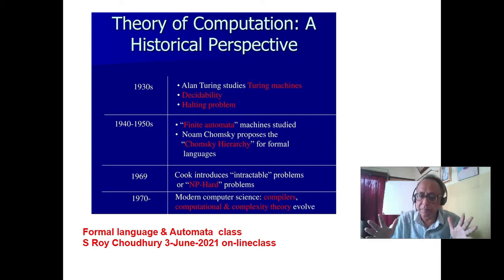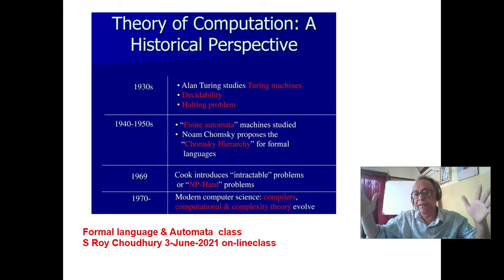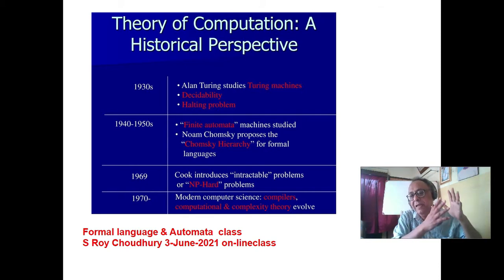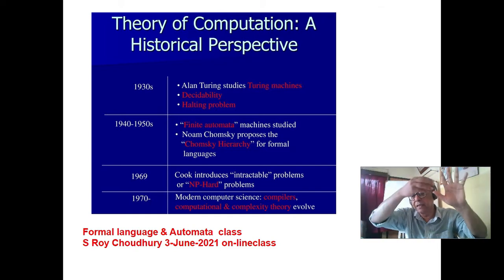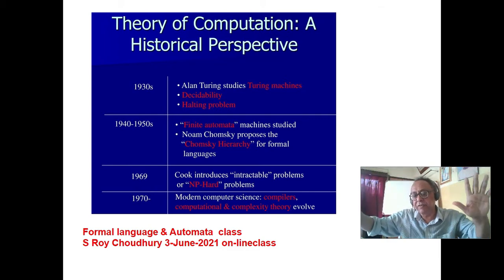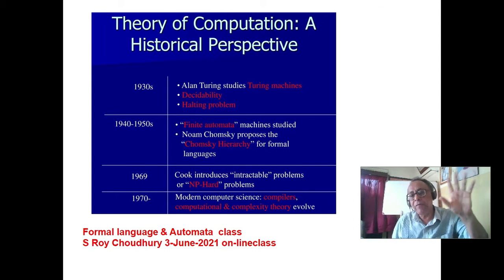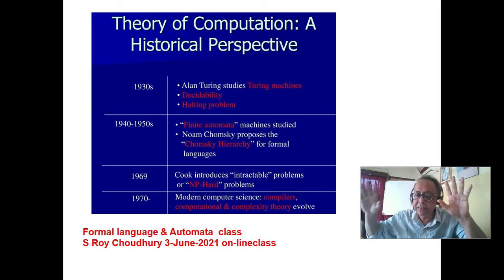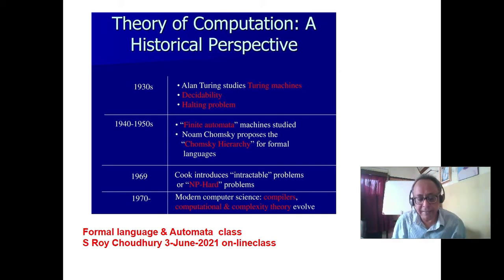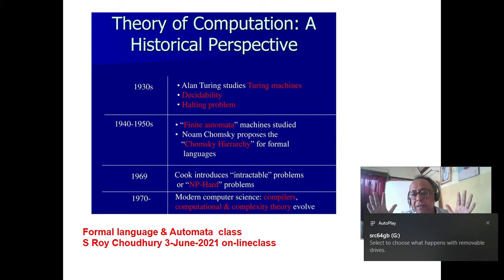These are called NP-hard problems. There are also unsolvable problems — the Turing halting problem is one. Another unsolvable problem: if two context-free grammars exist for the same context-free language, it is not solvable to determine whether the two grammars are equivalent. A language can have many grammars — it is a one-to-many combination — and you can only show equivalence by examples, there is no direct proof.